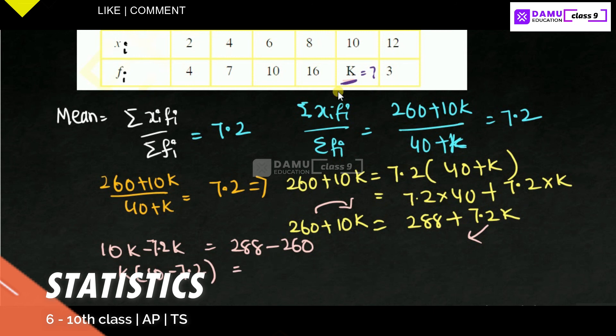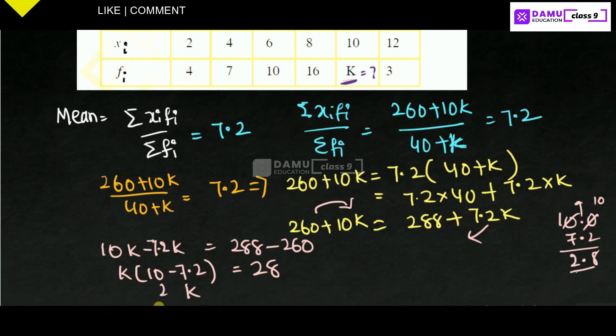Here 10 minus 10.0 we have to take it. 10 minus 2, you are borrowing means it will become 9 minus 2 is 7. What is the value here is 2.8? That will be equal to 28. K will be equal to 28 by 2.8. Multiply and divide it with 10, 10.